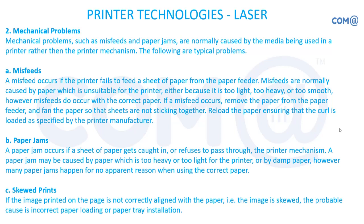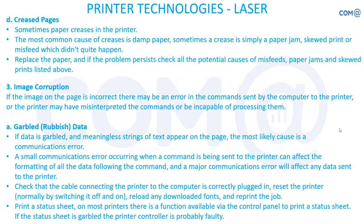Skewed prints — where corners are not properly aligned and the image appears diagonal — are caused by incorrect paper loading or paper tray installation. One side of the print is smaller while the other is larger, creating a cross-print effect. Instead of loading multiple sheets, try manual feeding one page at a time to check whether feeding is straight. Inspect the paper feed sensor and paper feed area arrangement to fix the alignment issue.